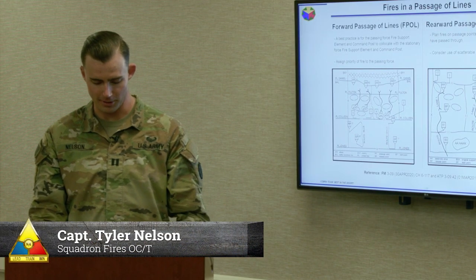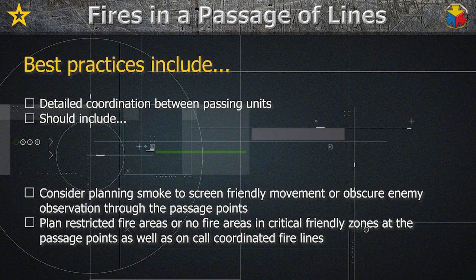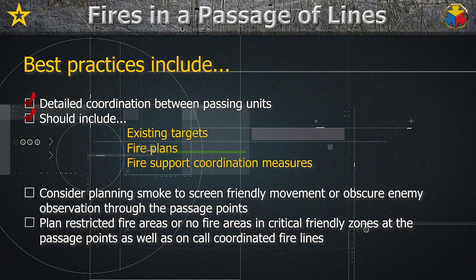Fires in the passage of lines: best practices include detailed coordination between passing units and should include existing targets, fire plans, fire support coordination measures, and clearance of fire procedures. Consider planning smoke to screen friendly movement or obscure enemy observation through the passage points. Plan restricted fire areas or no fire areas and critical friendly zones at the passage points, as well as on-call coordinated fire lines.